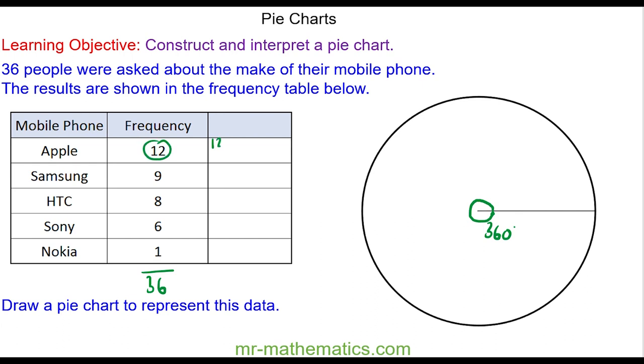So the fraction is 12 people out of 36. We can simplify this fraction to make one third. So one third of the circle will be for Apple, and one third of 360 is 120 degrees. So we're going to draw an angle at 120 degrees.